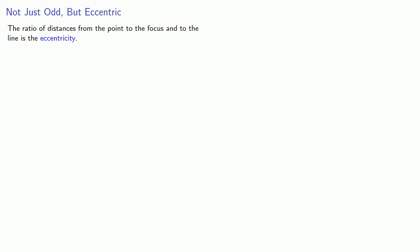So, let's give it a name. The ratio of distances from the point to the focus and to the line is the eccentricity. And, we define the conic sections by their eccentricity.